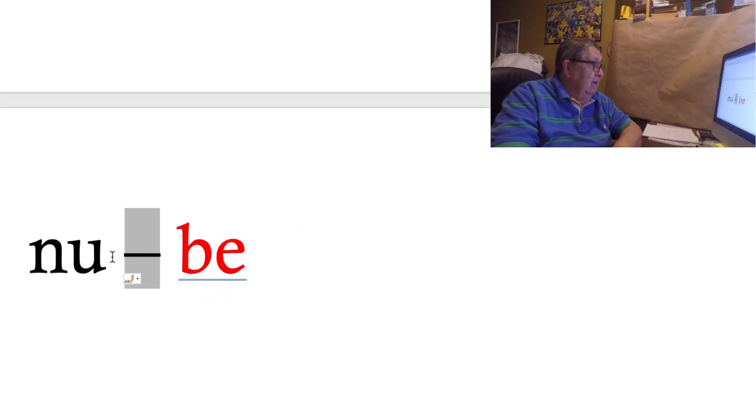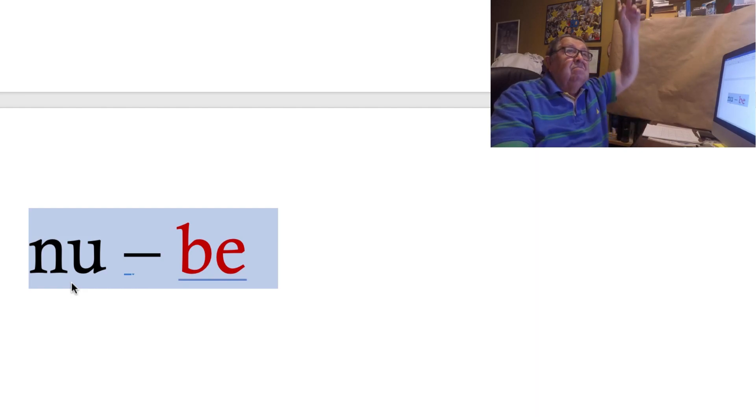Aquí tenemos la N con la U, es nu, y la B con la E es be. Nube, la nube del cielo allá arriba.